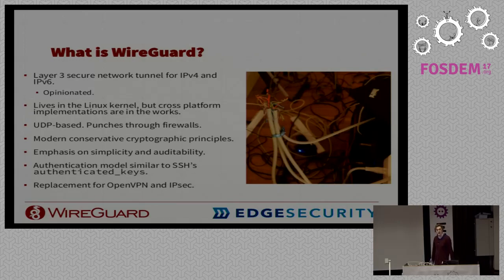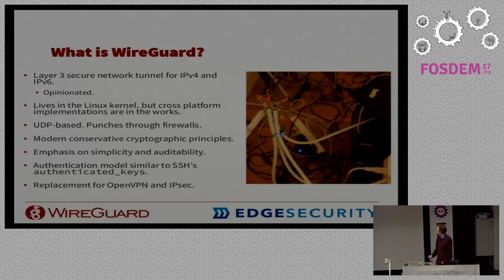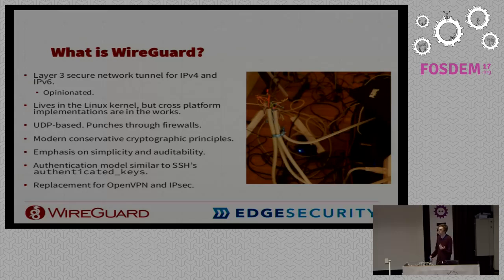The authentication model aims to be like SSH — you share keys by sending your public key through an encrypted email or some other mechanism. You have simple public keys that you copy and paste around. WireGuard tries to be as easy as that, but for VPN. In general, it aims to be a replacement for OpenVPN, IPsec, and various other VPN technologies that live in kernels or user space.